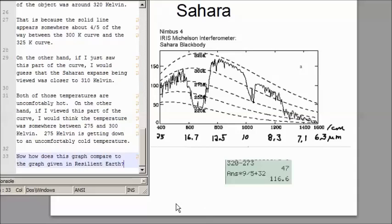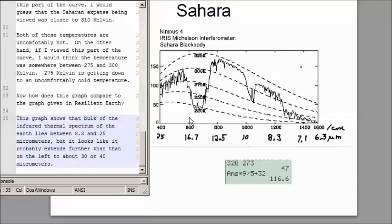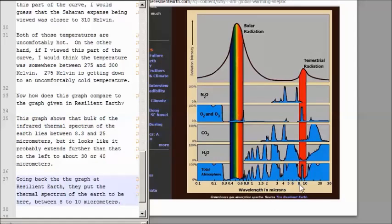Now, how does this graph compare to the graph given in Resilient Earth? This graph shows that the bulk of the infrared thermal spectrum goes from about maybe 8.3 to 25 micrometers. But of course, it extends further than that to about 30 or 40 micrometers. Going back to the graph at Resilient Earth, they put the thermal spectrum of the Earth here to be about between 8 to 10 micrometers. Maybe a little bit, it extends over to 15 micrometers there.